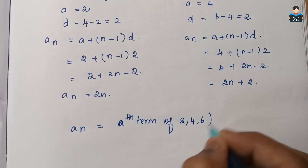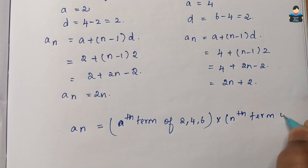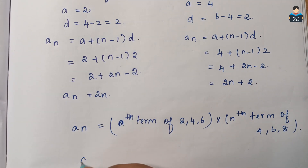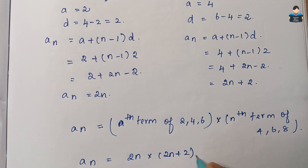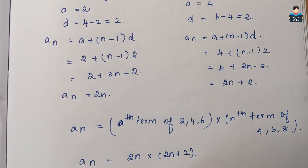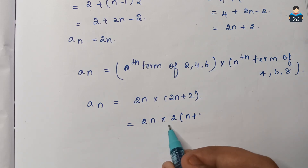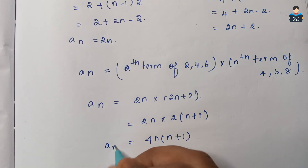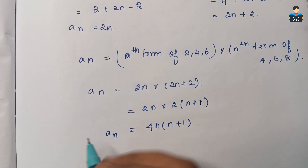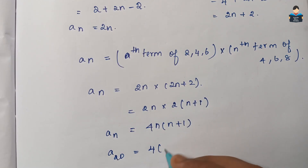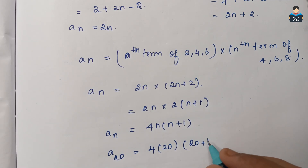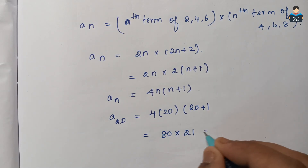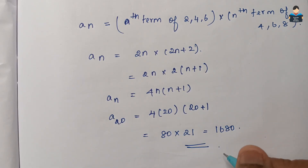So the nth term of the series is aₙ = 2n × (2n + 2). For the 20th term: a₂₀ = 2(20) × (2(20) + 1) = 40 × 41 = 1,680. So the 20th term is 1,680.